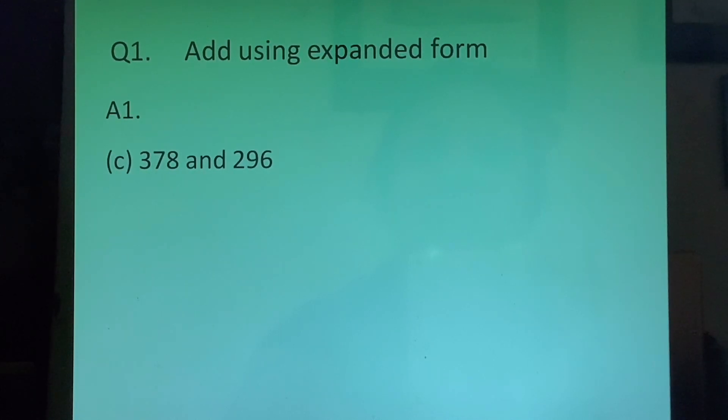C part, 378 and 296. We will write it as 378 plus 200 plus 96 which will give us 578 plus 90 plus 6. 96 is broken and written as 90 plus 6, which will give us 668 plus 6. And this finally will give us the result as 674.